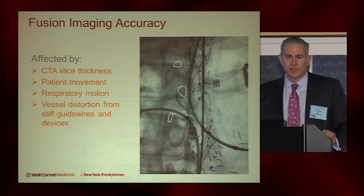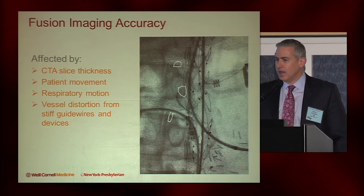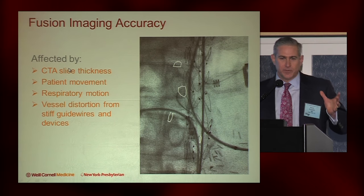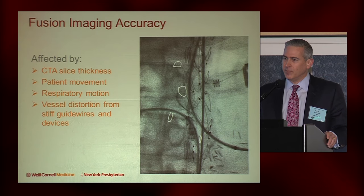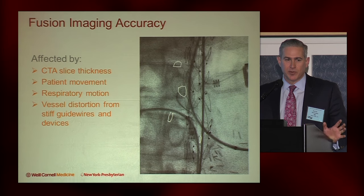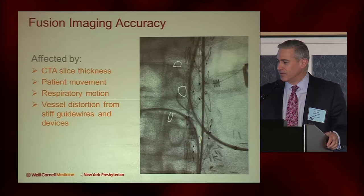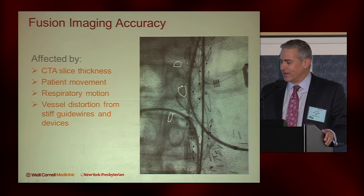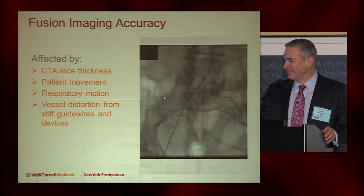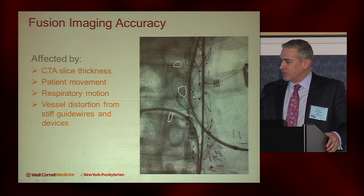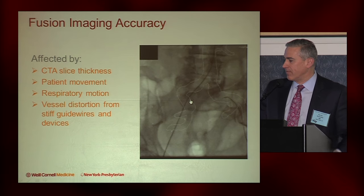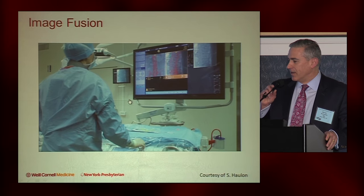There can be some issues with accuracy using the different systems, and they do differ whether you're on a Siemens, GE, or Philips system. Accuracy can be affected by the quality of your CTA preoperatively, the slice thickness, patient movement — if the patient moves on the table or if you move the patient after the cone beam CT while prepping, that can throw registration off. There's also respiratory motion, particularly of the renal arteries, and vessel distortion from stiff guide wires and devices. Here you can see a stiff sheath or guide wire straightening those iliacs, so overlays looking at the iliacs, the renal arteries, or a really angulated neck can be modified by the stiff angles.